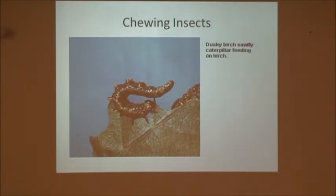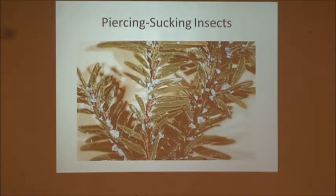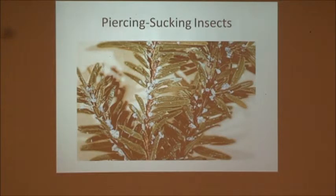Chewing insects — a lot of caterpillars are examples of this. They have teeth-like mouth parts that actually gnaw holes in your leaf or chew the edges off. This is a birch sawfly caterpillar — much like other sawfly caterpillars it munches your leaves down. Piercing and sucking insects — hemlock woolly adelgid is one example; it's not as common as it used to be, since a lot of companies now know how to take care of them.